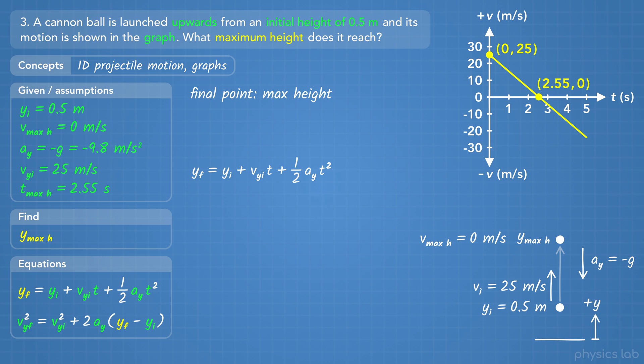Let's try using this equation first. The final point is at the maximum height, so we plug in 0.5 meters for the initial position, 25 meters per second for the initial velocity, 2.55 seconds for time, and negative 9.8 meters per second squared for acceleration. That gives us 32.39 meters for the final y position, which is the maximum height.